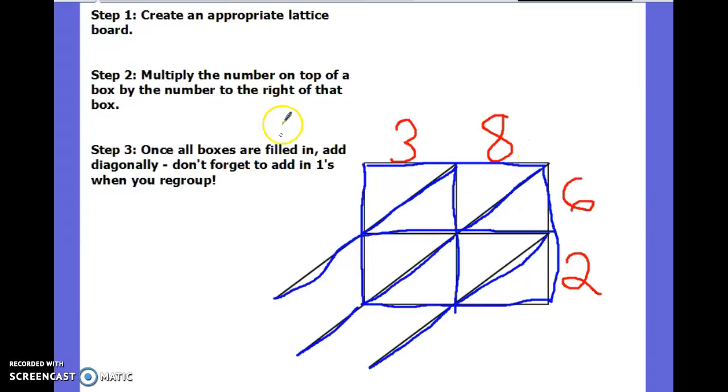38 times 6, I'm ready for step 2. Multiply the numbers on top of the box by the numbers to the right of the box. I multiply the top with the side here, which is 6 times 8, then 6 times 3. 8, 16, 24, 32, 40, 48, I'm done. Put 48 inside my lattice box. 6, 12, 18, then I stop and put 18 inside my lattice box.